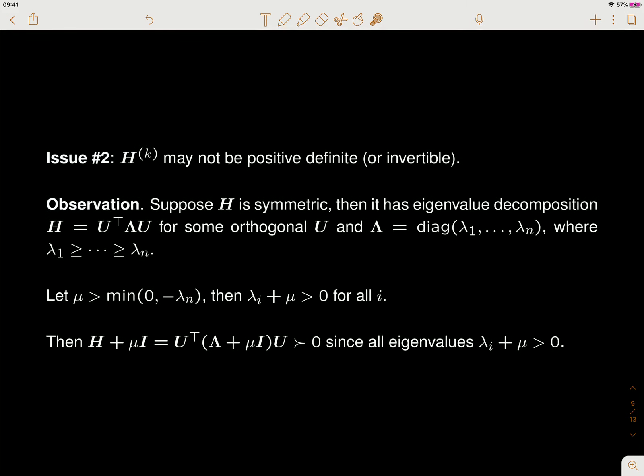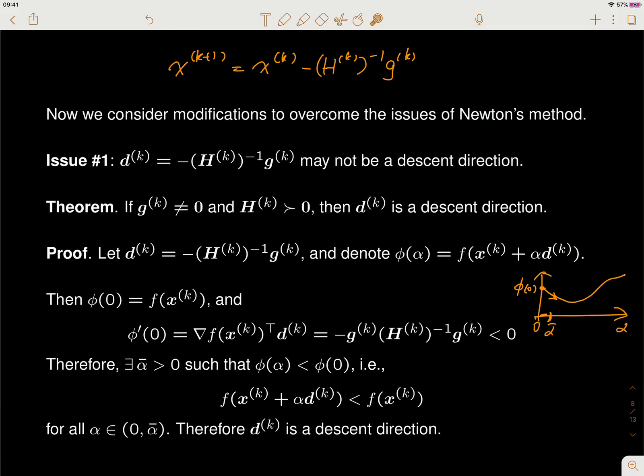If H_k is positive definite, we don't need to worry about the descent direction. But it's still possible that H_k is not positive definite, in which case we cannot guarantee d_k is a descent direction. Furthermore, H_k may have zero eigenvalues, making it degenerate and non-invertible, so we cannot even compute the Newton step.